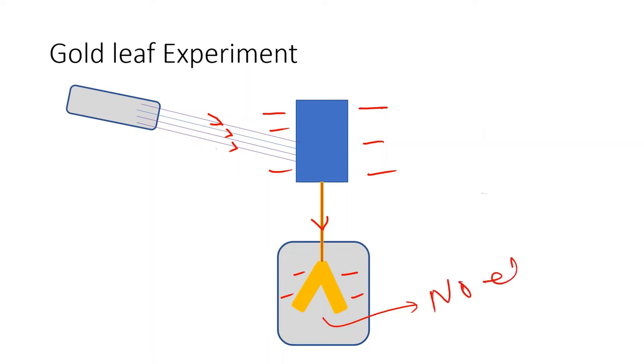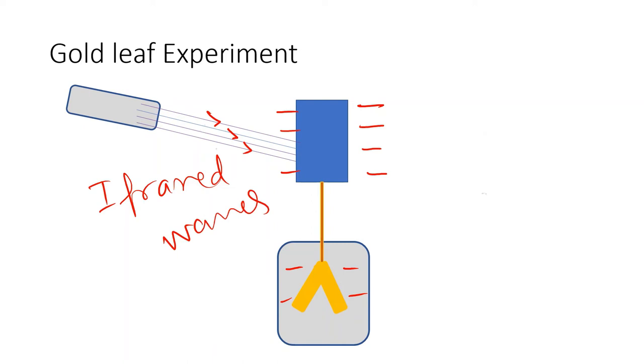Let us check with other wavelengths. Now when infrared waves, which have higher wavelength than the visible light, fall on this zinc plate, what happens? Again, there is no effect.